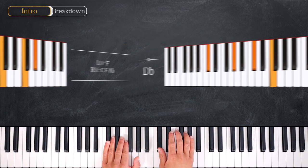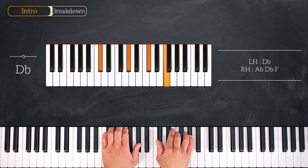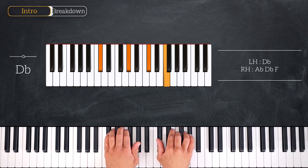From here we'll go to the fourth degree playing this Db major. So we have Db, Ab on the left and Db, F on the right.